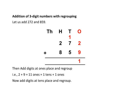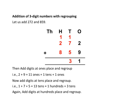Now, add digits at 10's place and regroup. That is, 1 plus 7 plus 5 is equal to 13, or 13 tens is equal to 1 hundred plus 3 tens. Again,